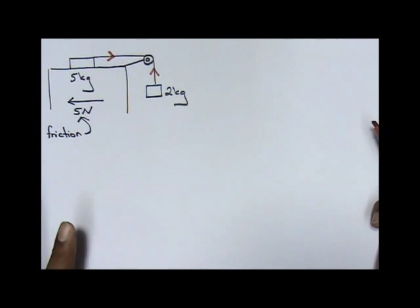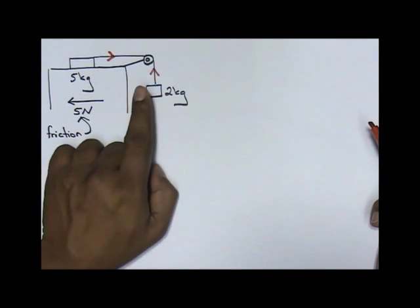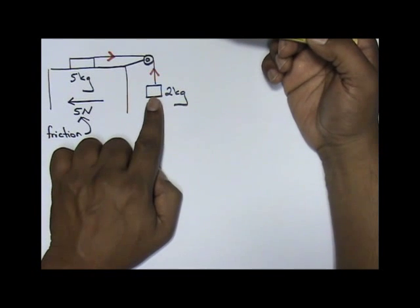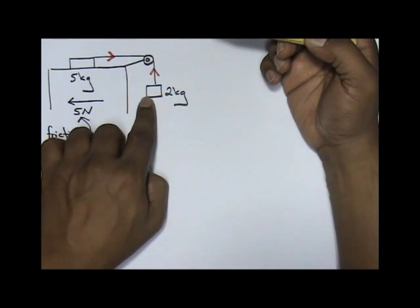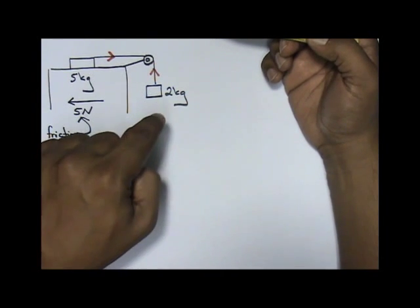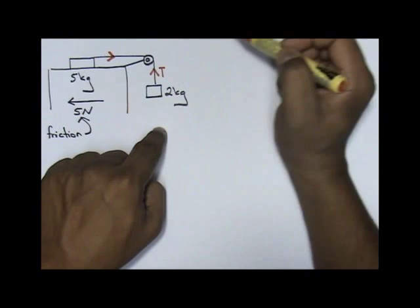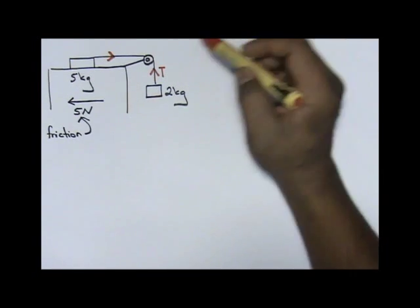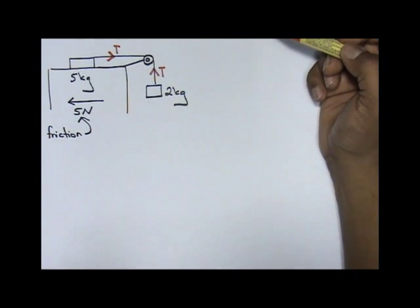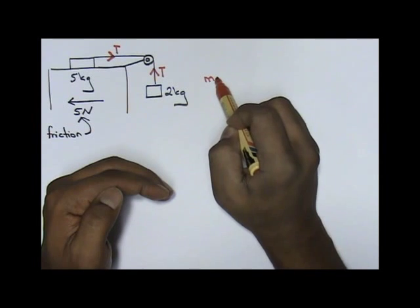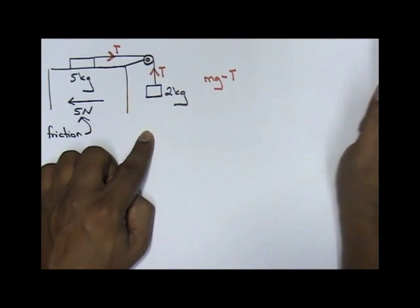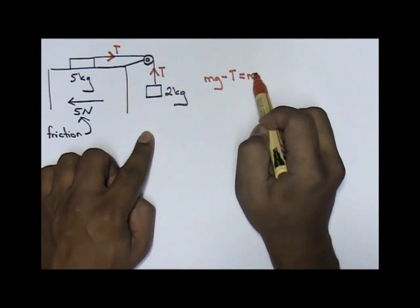Now to solve this, let's talk about this two kilogram weight first. This two kilogram weight is going down. Ask yourself: mg or tension, which value is higher? If it's going down, always mg minus tension equals ma because mg is higher.